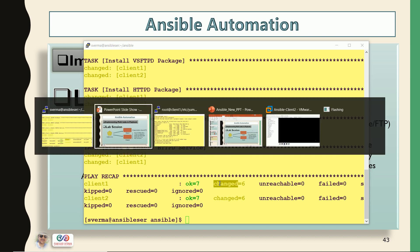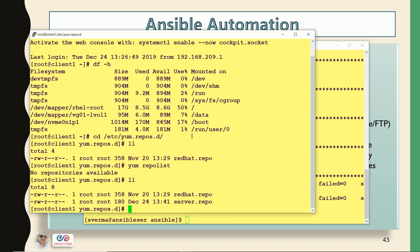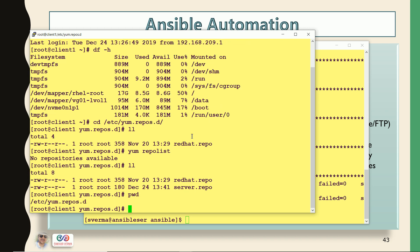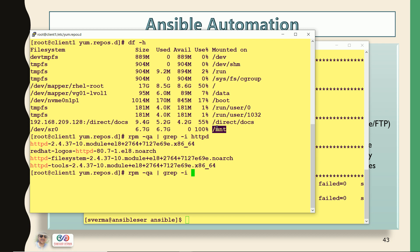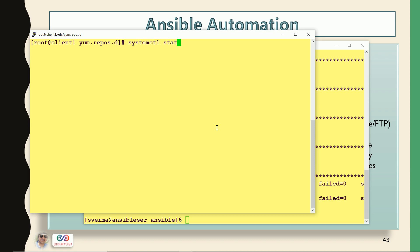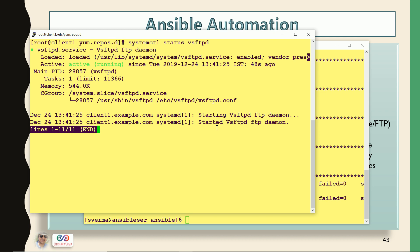Six changes have been done. Let me log into my client1 and check — here you can see it has copied the repo file. And with df -h you can see it has mounted the OS drive as well. Let me check the packages with rpm -qa — here you can see the Apache package has been installed, both packages have been installed. Let me check the service: systemctl status vsftpd — service is running and enabled. So whatever multiple tasks we mentioned in the playbook, all have been performed.